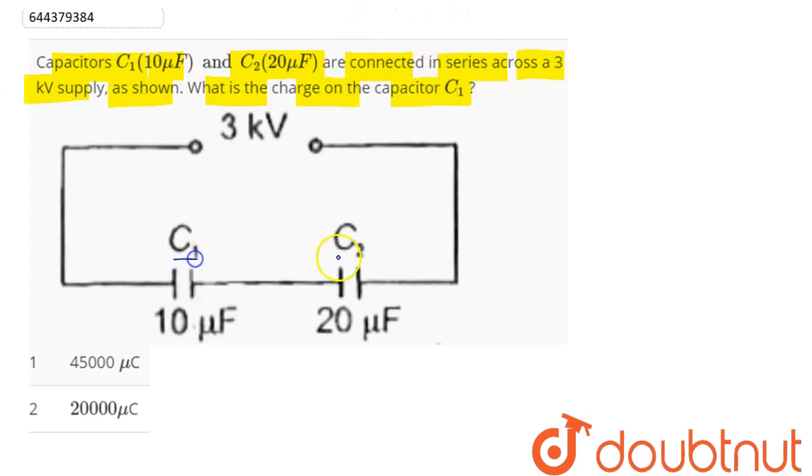Now we can see here these two capacitors are in series. So their equivalent capacitance in series can be written here as C1 into C2 divided by C1 plus C2.